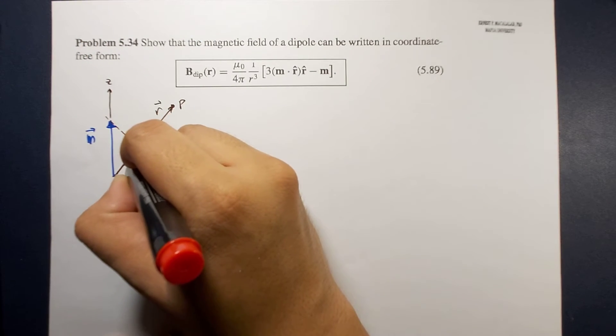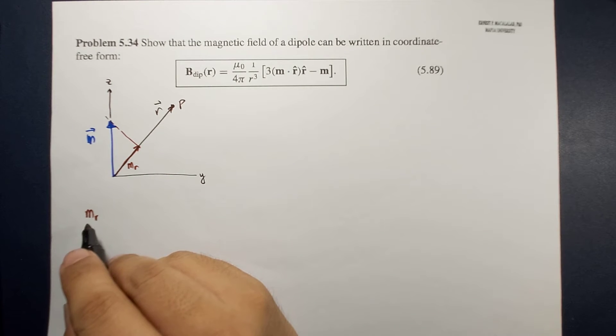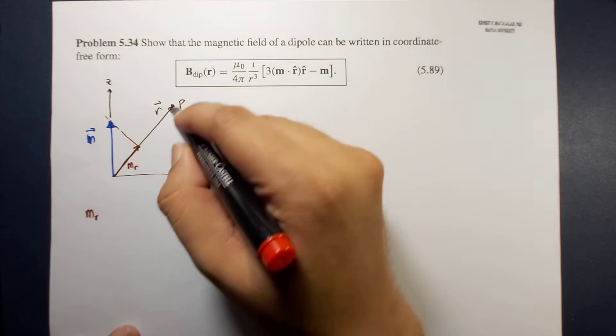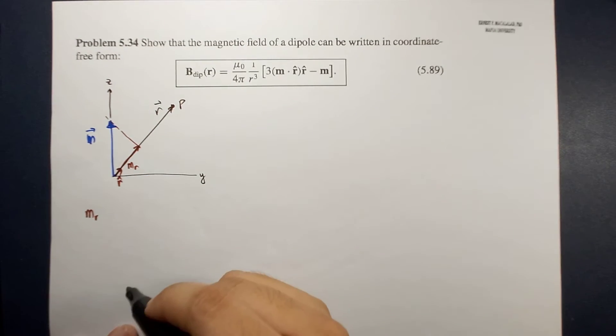Okay, let's call this m_r where m_r is the component or the projection of m along the r direction. So remember that this is your r hat.